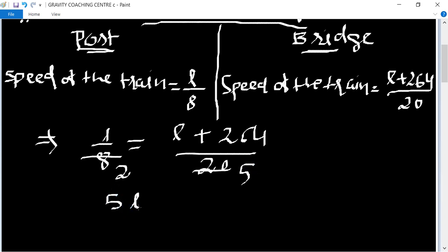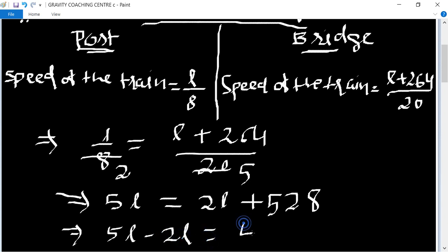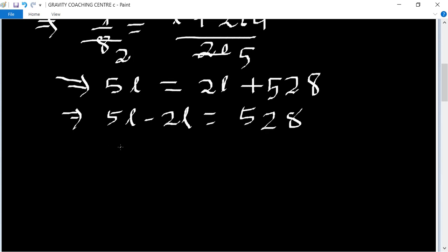So 5L equals 2L plus 264 into 2, which is 528. Now 5L minus 2L equals 528. So 3L equals 528.